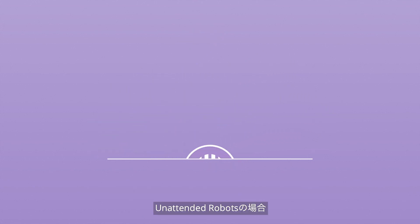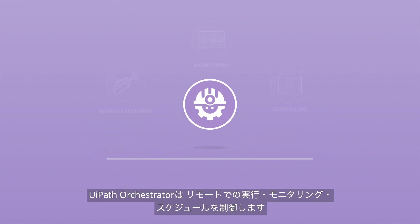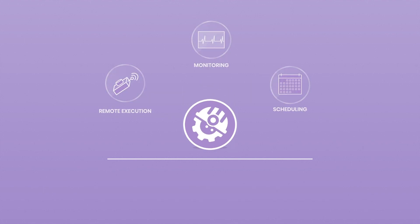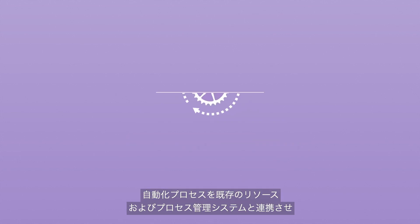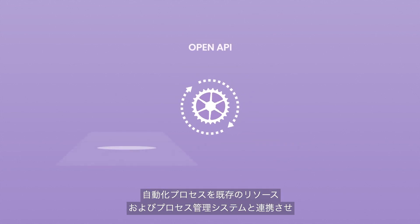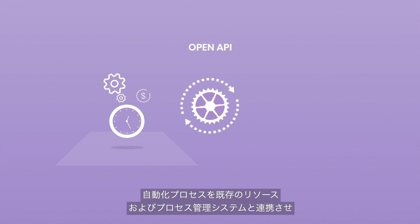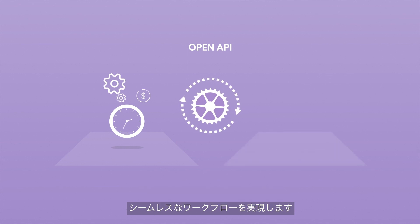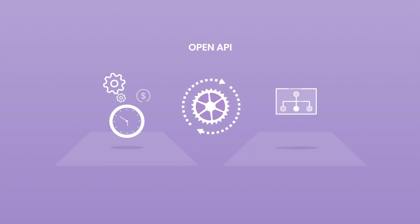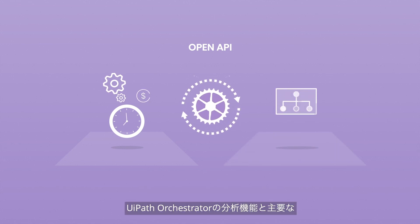For your unattended robots, Orchestrator controls remote execution, monitoring, and scheduling. Through our open API, Orchestrator can integrate automated processes with your existing resource and process management systems for a seamless workflow.